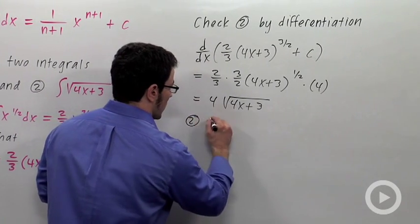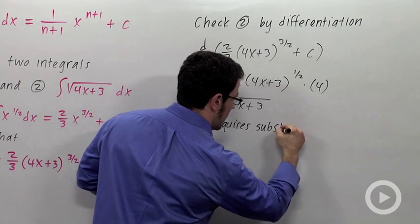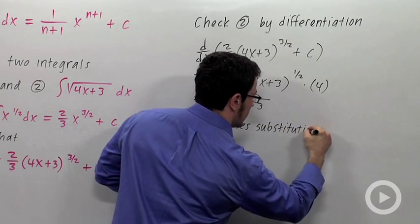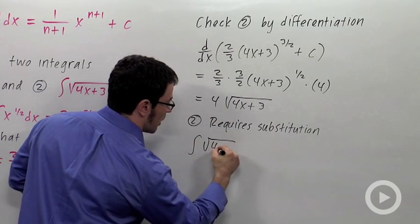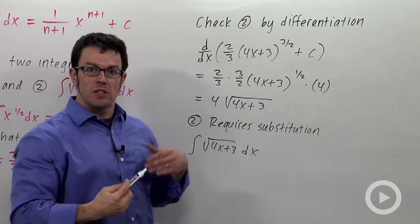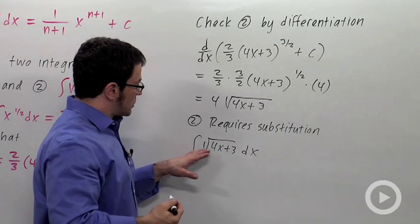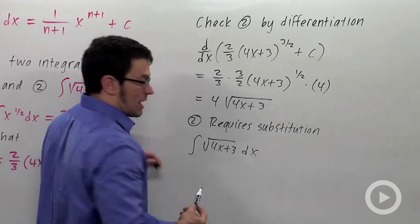So, integral 2 requires substitution. Let's take a crack at it. So I have the integral of root 4x plus 3 dx. Remember, when I use the method of substitution, I look for a composite function. And this is a composite function. I want to substitute for the inside part.